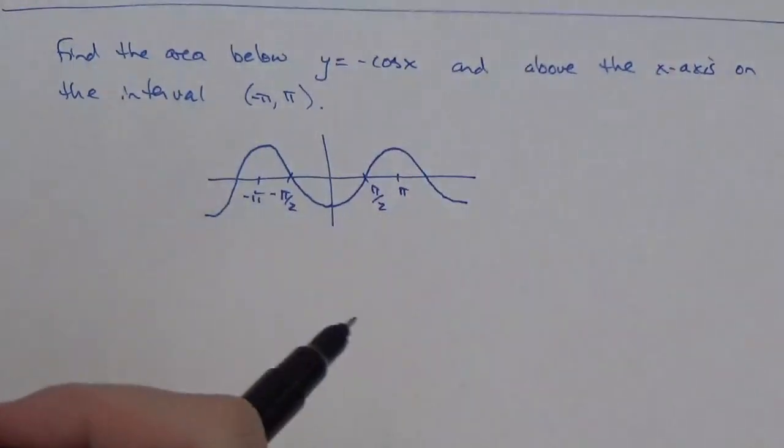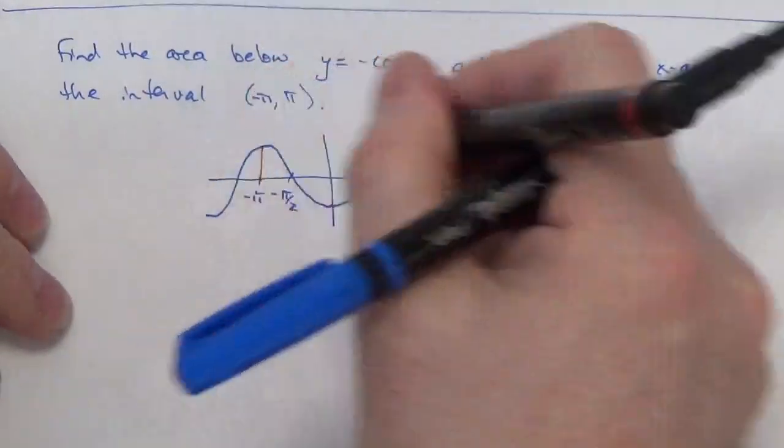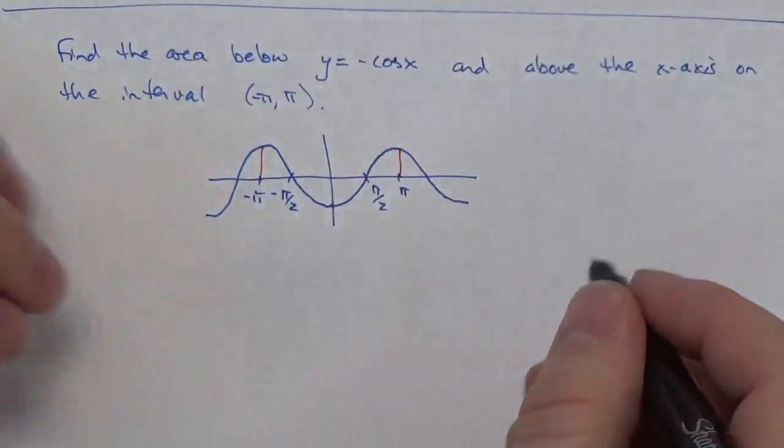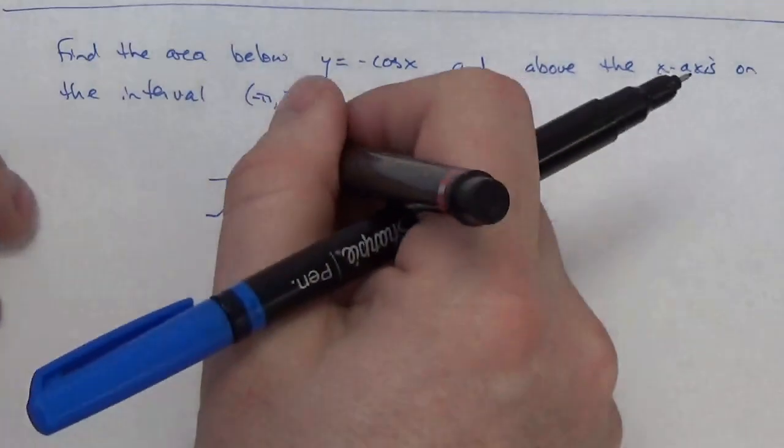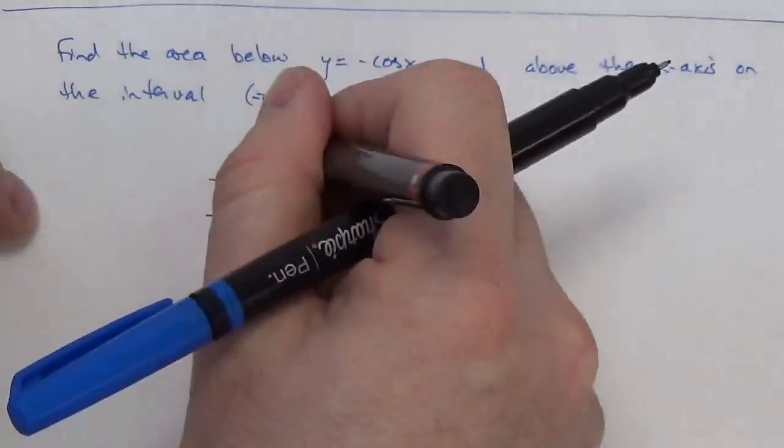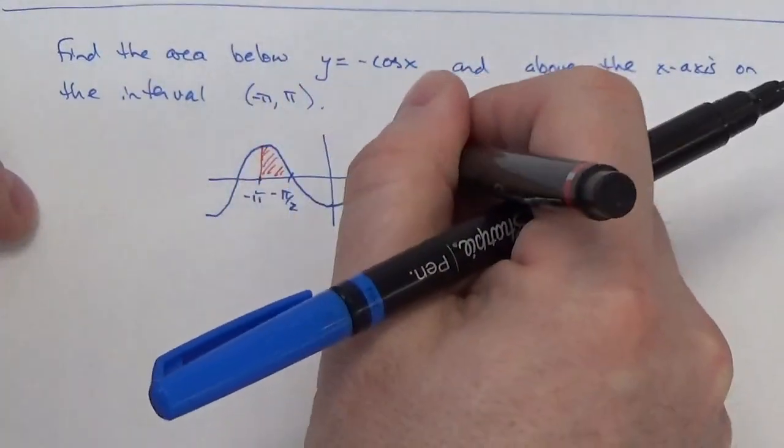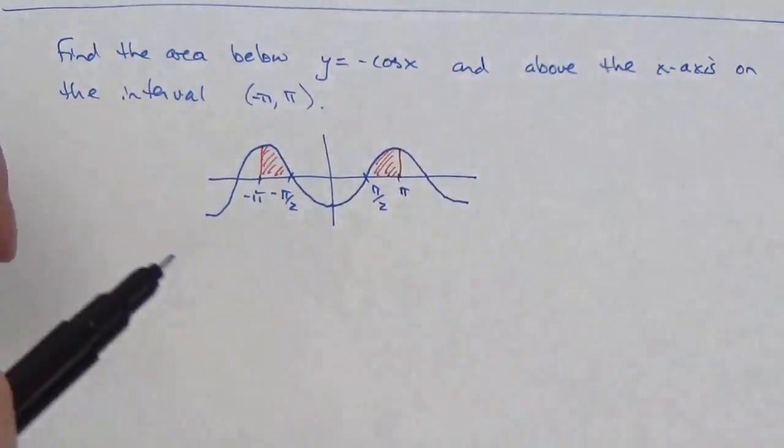So, the interval that I'm looking at here is from negative pi to pi. But I'm only interested in the part of the graph that's above the x-axis, so I'm only looking for that area and that area right there.